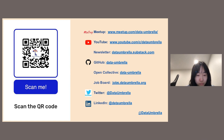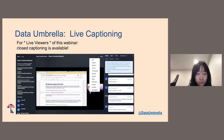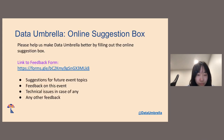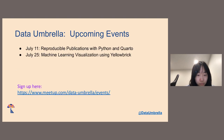You can scan the QR code or click on the links to follow us on our socials. This event has live captioning, and you will be able to access the captions once the video is uploaded on YouTube. We have an online suggestion box — please feel free to drop in suggestions, requests for future topics, or feedback. We have two upcoming events on July 11th and July 25th on Python and Quarto, and machine learning visualization using YellowBrick.